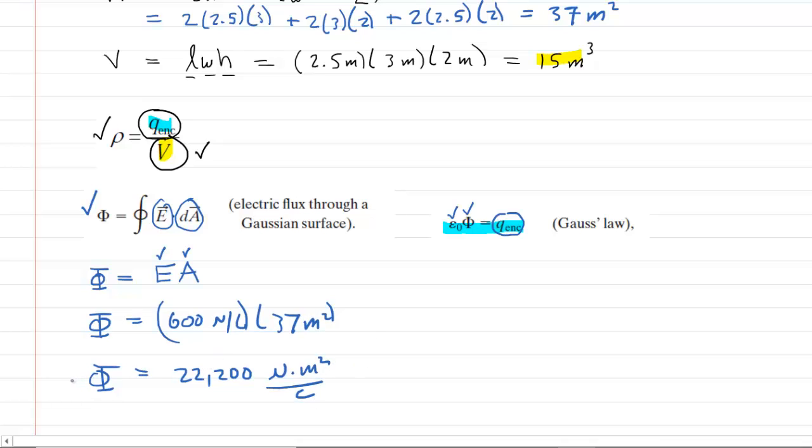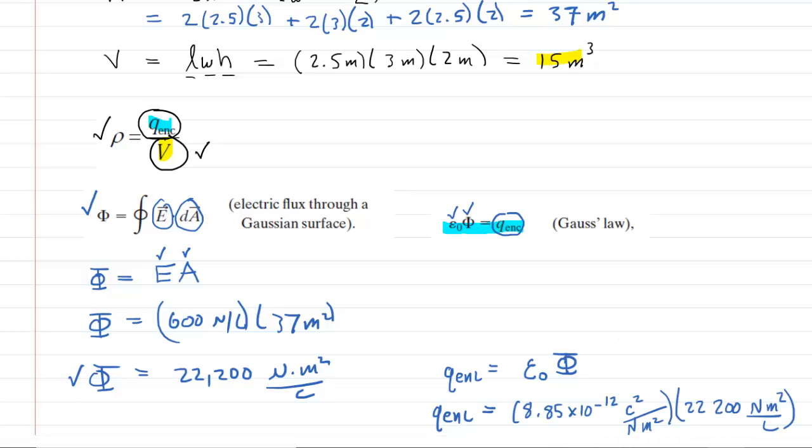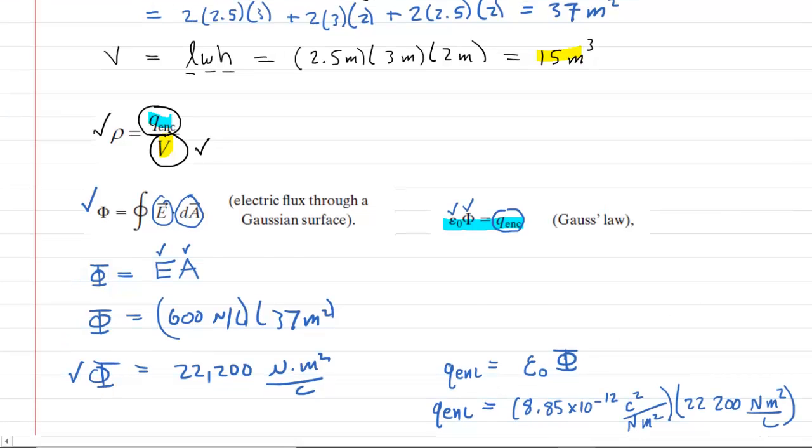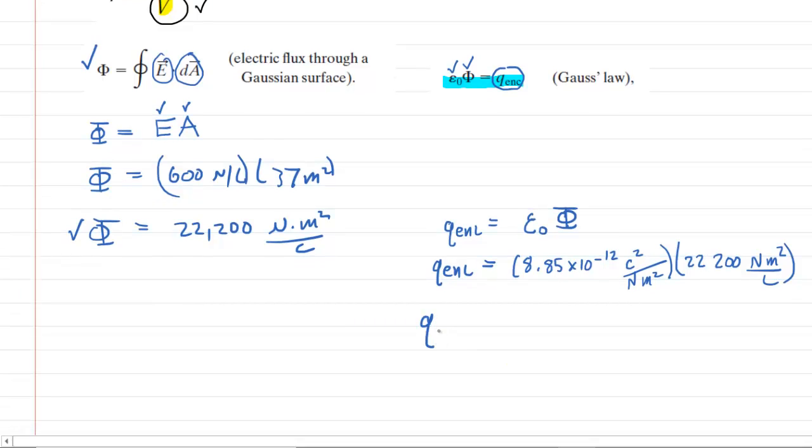Now that we have the total electric flux, we can easily calculate the enclosed charge. So let's do that next. We can see from Gauss's law that the enclosed charge is equal to a constant multiplied by that total electric flux. So we'll go ahead and plug in those values now. So we have plugged in those known values. And when we multiply them, we're going to get about 1.96 times 10 to the minus 7. And then we're going to end up with coulombs.